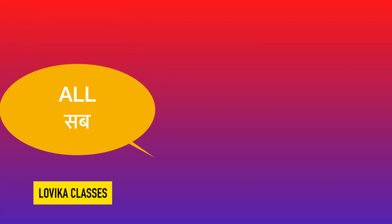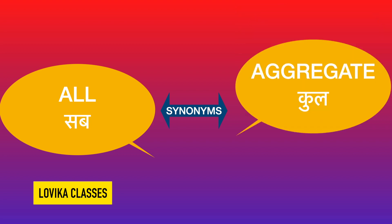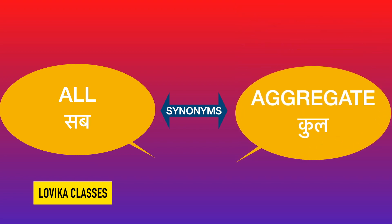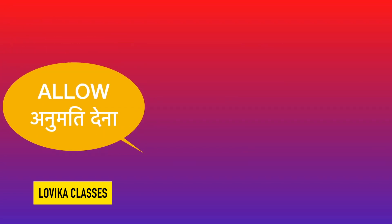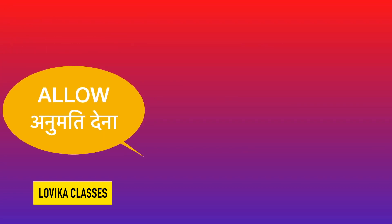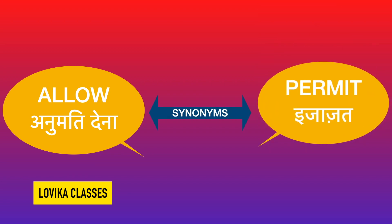All — all means sab. Its synonym is aggregate, meaning the whole or total. Allow means anumati, that means permission. Its synonym is permit.